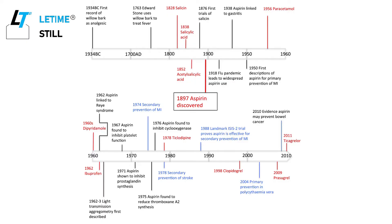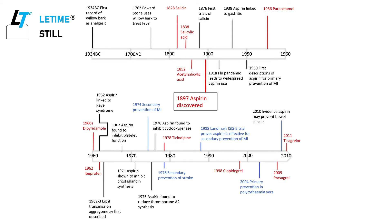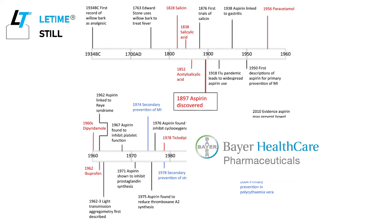Use of willow bark for pain relief traces back to almost 4,000 years ago. In the 18th century, Edward Stone, the Oxford scientist, started using willow bark to treat fever. In the 1890s, the German dye manufacturer Bayer started their pharmaceutical division, and their first product was aspirin.